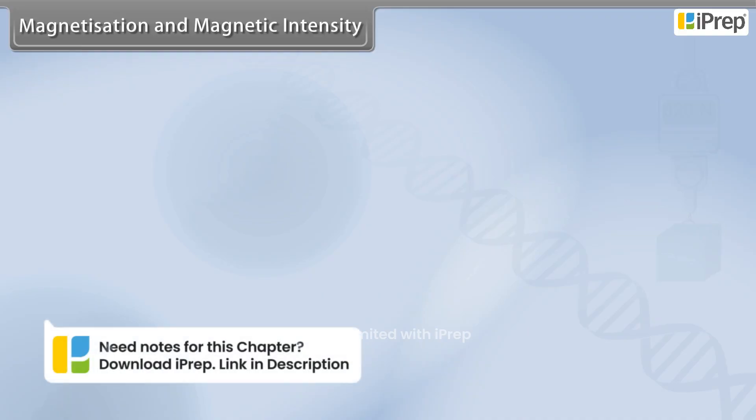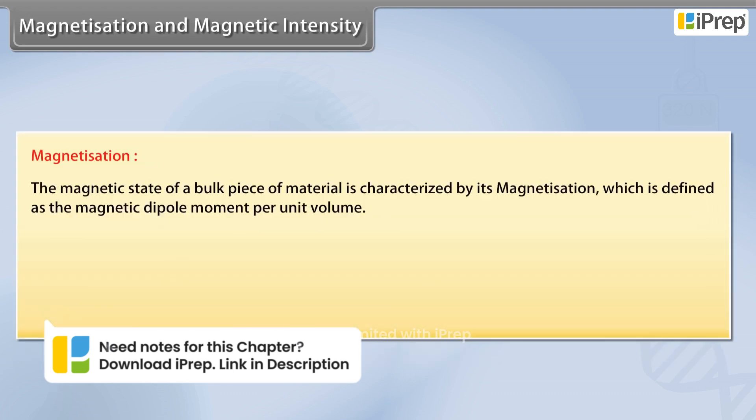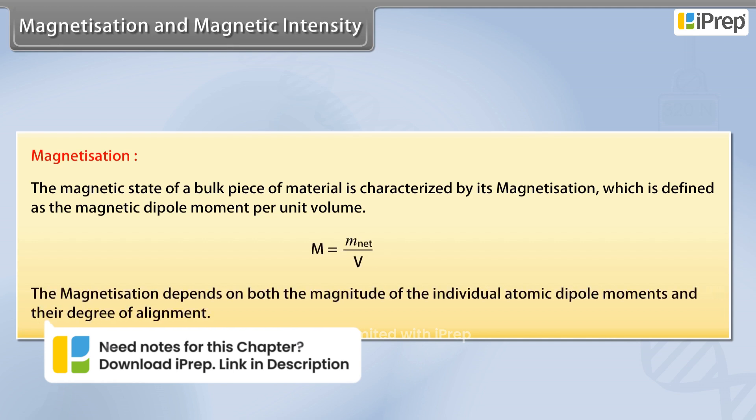Magnetization and magnetic intensity: The magnetic state of a bulk piece of material is characterized by its magnetization, which is defined as the magnetic dipole moment per unit volume. The magnetization depends on both the magnitude of the individual atomic dipole moments and their degree of alignment.